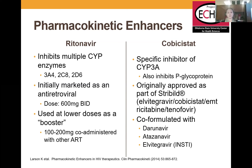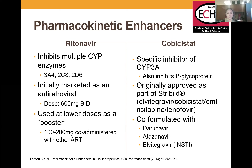Initially, ritonavir was dosed as an antiretroviral at 600 mg BID — the dose at which it interferes with viral replication — but it causes a ton of GI side effects and patients don't stay on it. At the lower pharmacokinetic-boosting dose, you get the good pharmacokinetic effects without that tolerability problem.